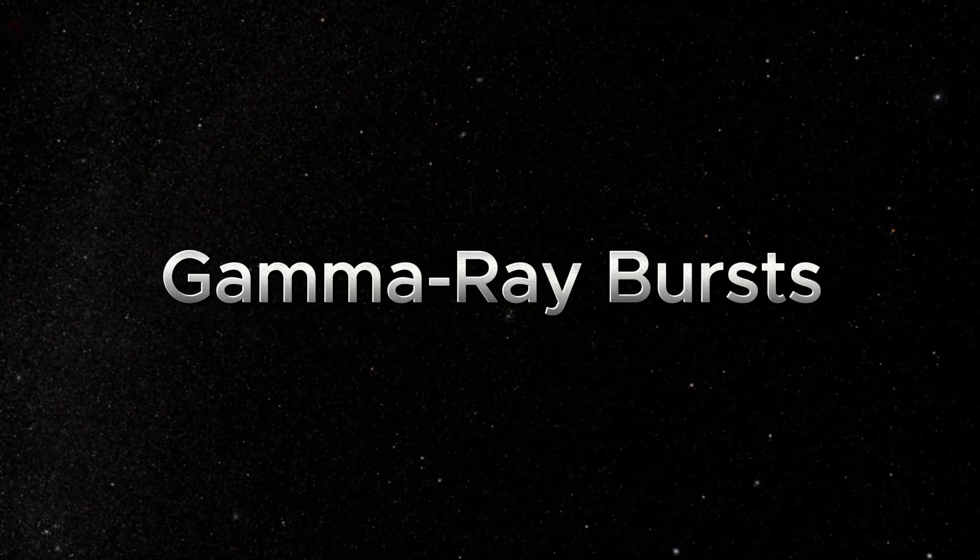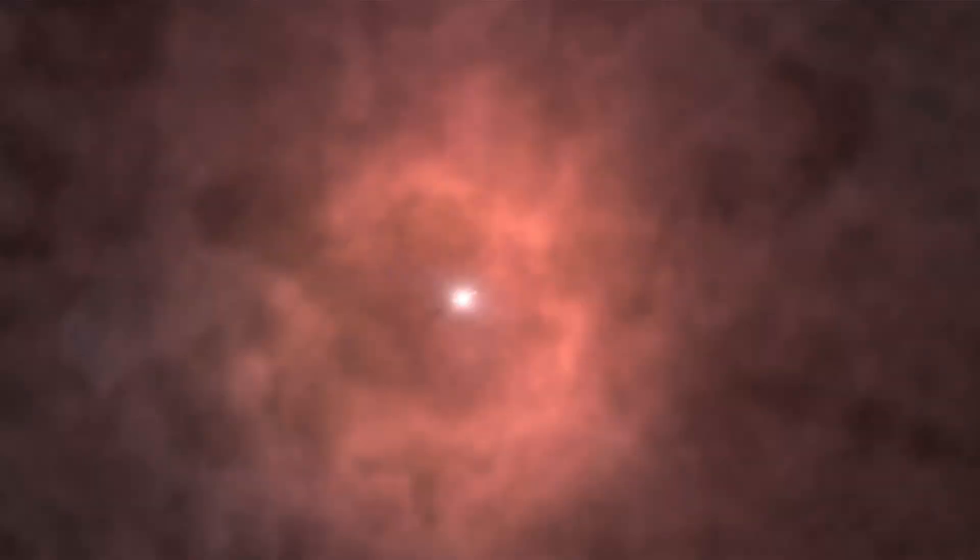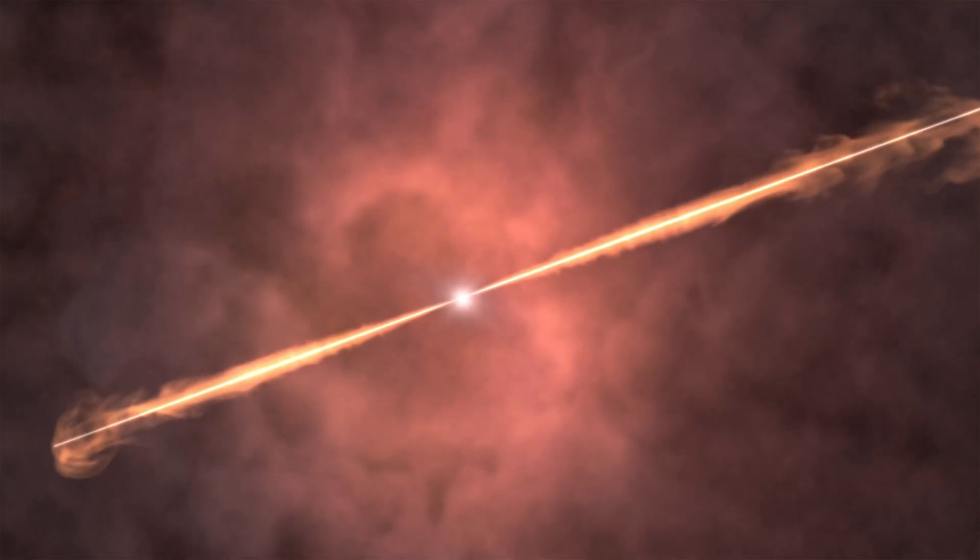Gamma-ray bursts are the universe's most powerful explosions since the Big Bang. In just seconds, they can unleash more energy than our Sun will emit over its entire lifetime. They're thought to happen when massive stars collapse into black holes, or when neutron stars collide.